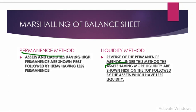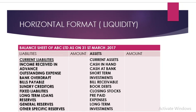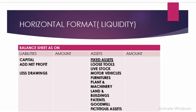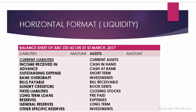The balance sheet is arranged on the basis of liquidity and is prepared on the last day of the accounting period. For example, 'Balance Sheet of ABC Limited as on 31st March 2017.' On the right-hand side, assets are shown. Since it is on a liquidity basis, liquid assets are shown first: current assets — cash in hand, cash at bank, short-term investments, bills receivable, sundry debtors, closing stocks, prepaid expenses — followed by fixed assets and long-term or trade investments.